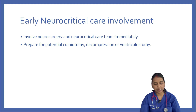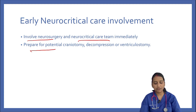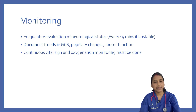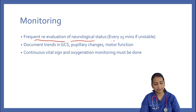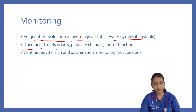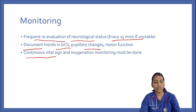Neurocritical care involvement: involve neurosurgery and neurocritical care team immediately and prepare for potential craniotomy, decompression, or ventriculostomy. Frequent re-evaluation of neurological status must be done every 15 minutes if the patient is unstable. Document trends in GCS, pupillary changes, and motor function, and continuously monitor vital signs and oxygenation.